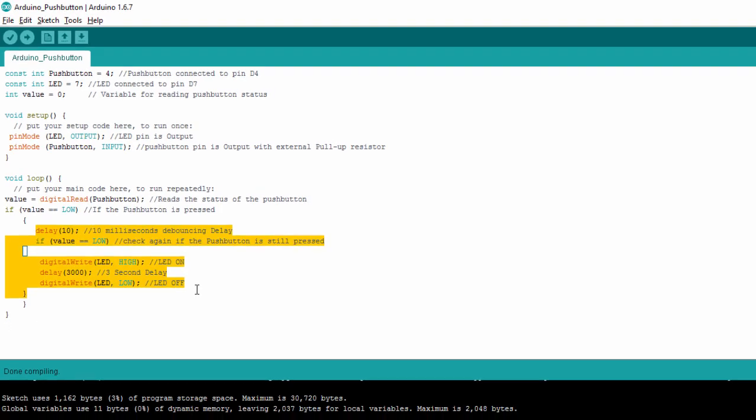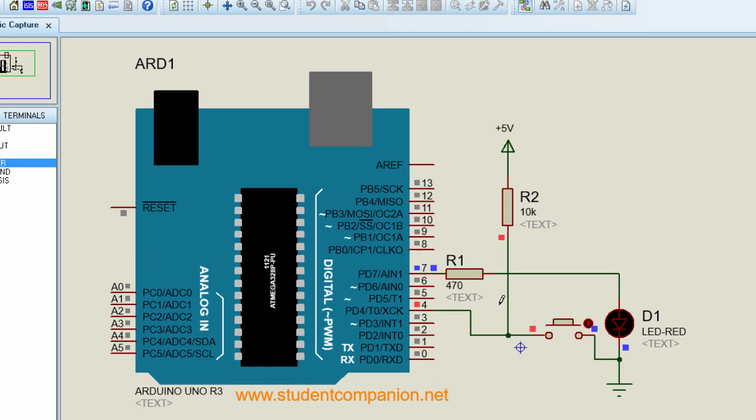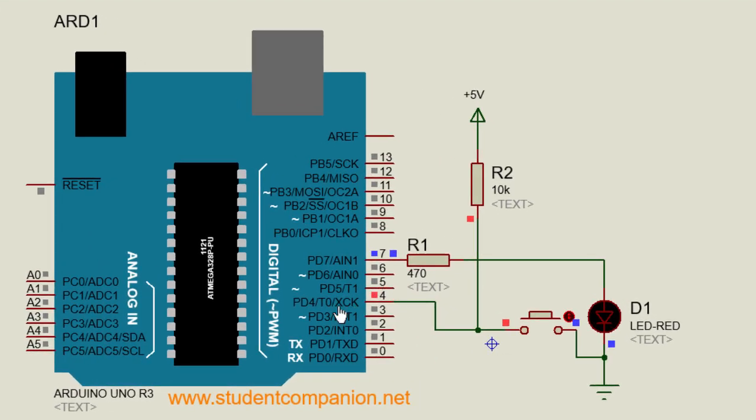Let us run our simulation. Run. You can see we've got 5 volt on D4 because our push button is open. The current flows from VCC to D4. So when I press my button, you can see the LED is on for 3 seconds. Then after 3 seconds, it's going to be off.